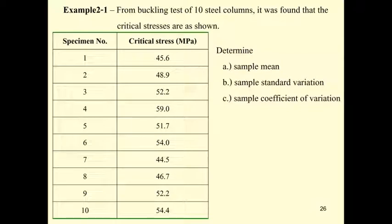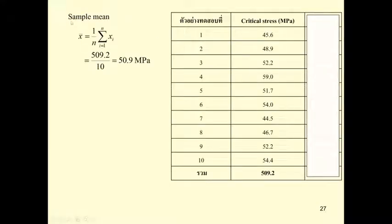Let us consider the first example. We perform a buckling test by compressing a steel column for 10 columns, and we get 10 values of critical stress. We can determine the sample mean, sample standard deviation, and sample coefficient of variation. The calculation is straightforward — you sum each value of critical stress for all 10 specimens to get a sum of 509.2, then divide by 10 to get the mean.